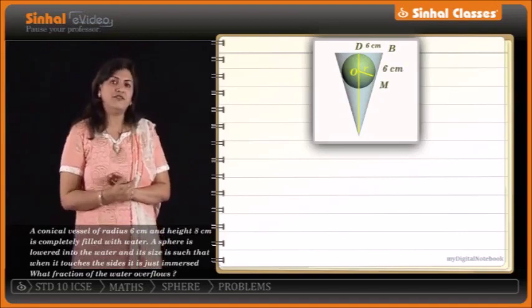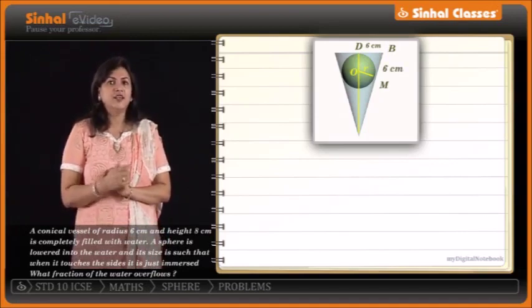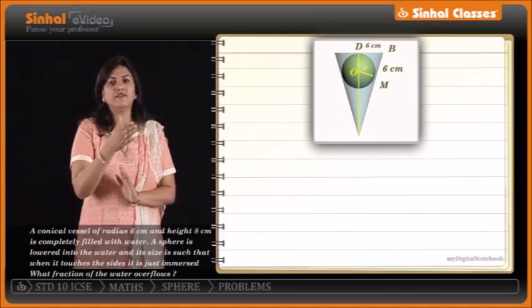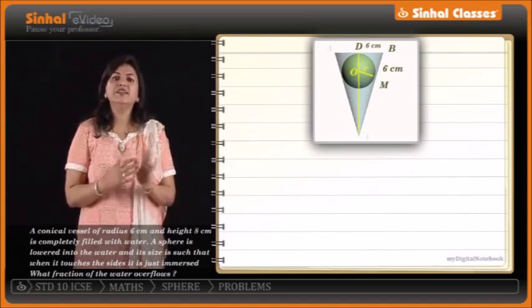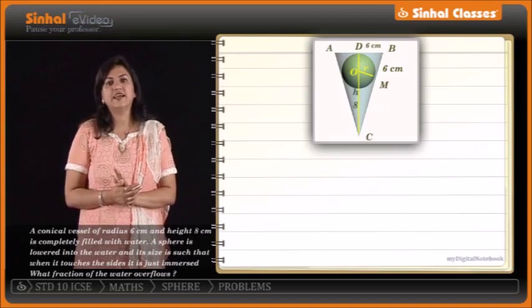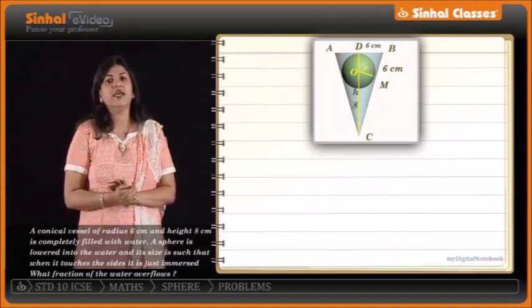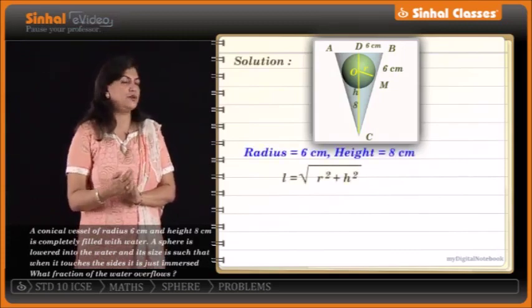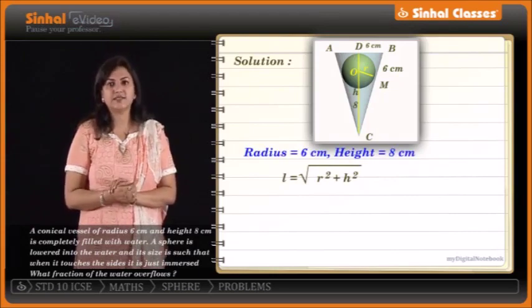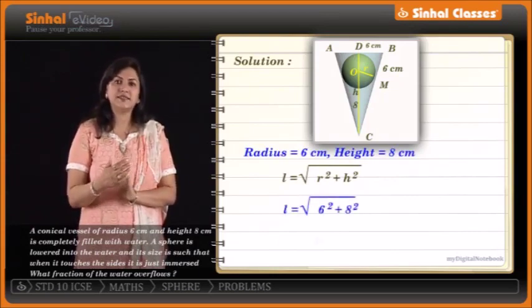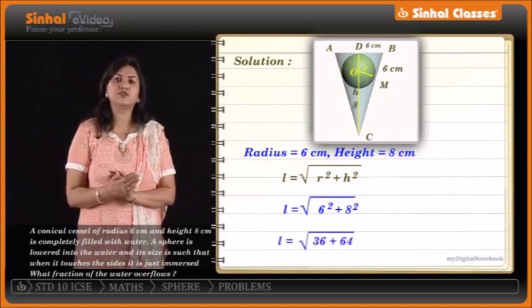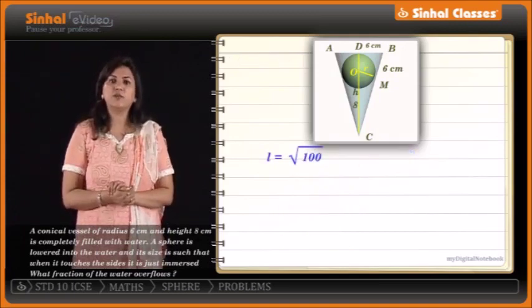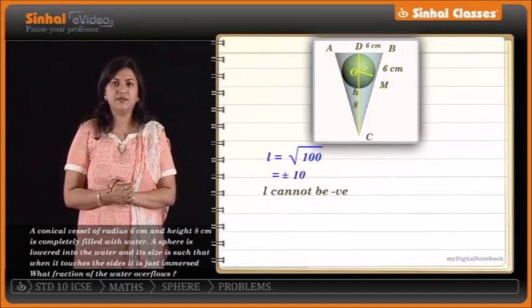We want to find the radius. We have the radius and height of the cone, so we can find the slant height using L = √(R² + H²) = √(6² + 8²) = √(36 + 64) = √100. So L is equal to 10 cm, since L cannot be negative.